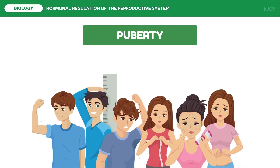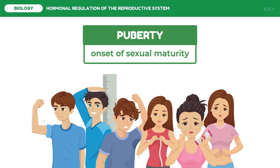In readiness for sexual maturity, puberty occurs. Various hormones signal the brain to activate the reproductive organs or gonads. Typically, puberty occurs for females at ages 10 to 11, and between 11 to 12 for males, though it can vary from person to person. Physical characteristics that develop during puberty are called secondary sex characteristics — examples include facial hair in males, breast development in females, or armpit hair for both sexes. The biological highlight of puberty is the maturity of the gonads, marking a person's reproductive ability.